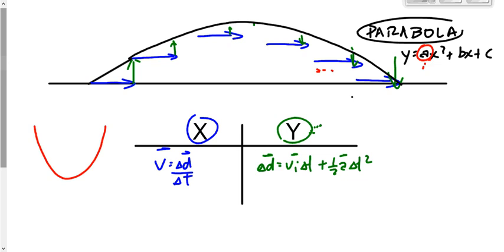This is the topic we're doing today and tomorrow: projectile motion. A projectile moves under the influence of just gravity, so there are no horizontal forces. The horizontal component is described by V = ΔD/ΔT, and the vertical component by one of the acceleration equations — probably D = ViT + ½AT². The strategy is simple: always start by writing down the two equations under X and Y. Do this on question number one of your final exam — everybody should get at least that first point.